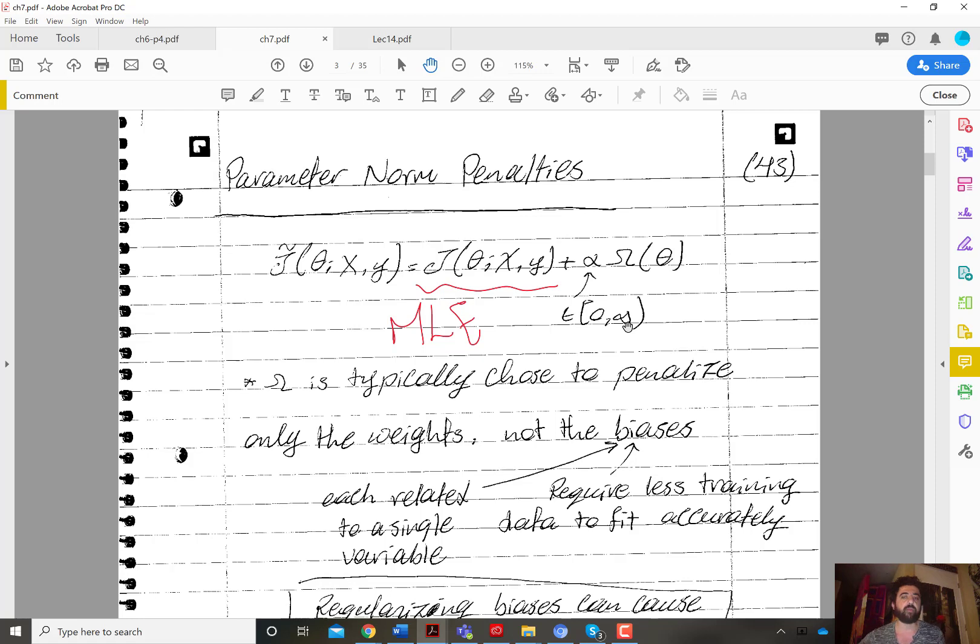So what it means is that as you increase alpha, the cost due to regularization starts to dominate the overall cost. So you start sacrificing more and more of the